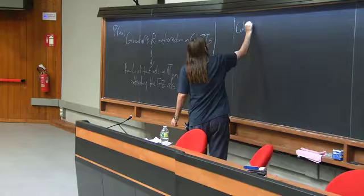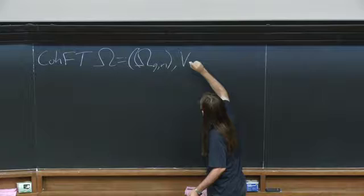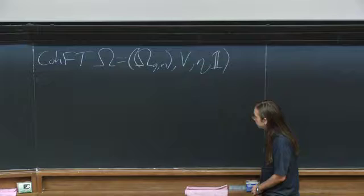The situation here is that we start with a cohomological field theory omega. Remember there's various data that this consists of: you have classes omega_{g,n}, you have a vector space V, you have a metric on the vector space, you have a unit element. It gives rise to more structure such as the quantum multiplication on V.